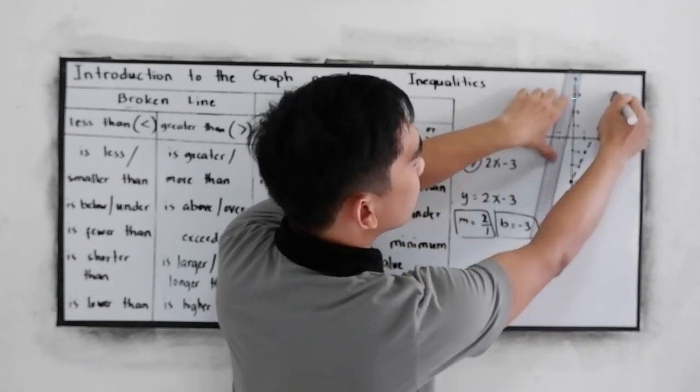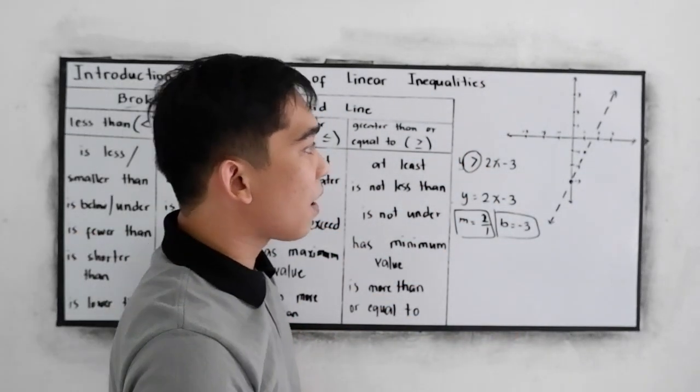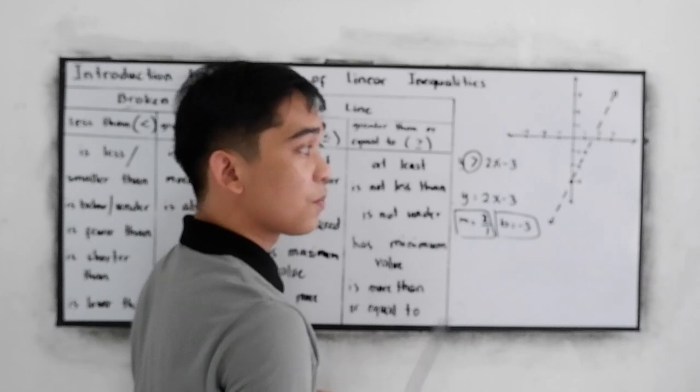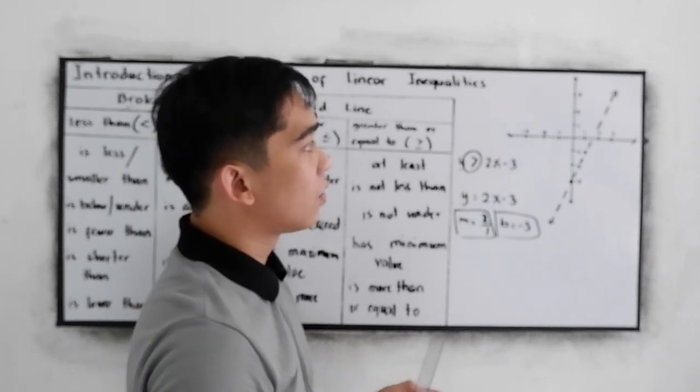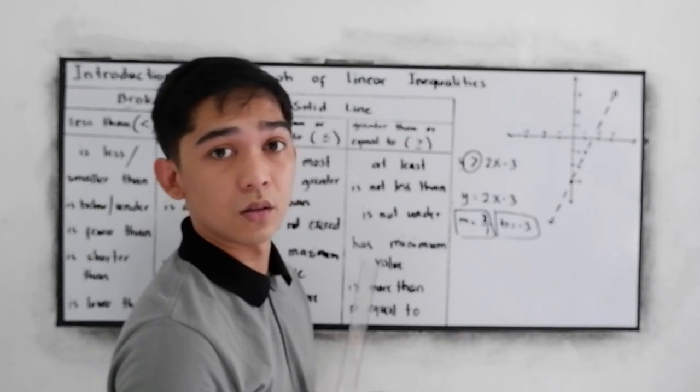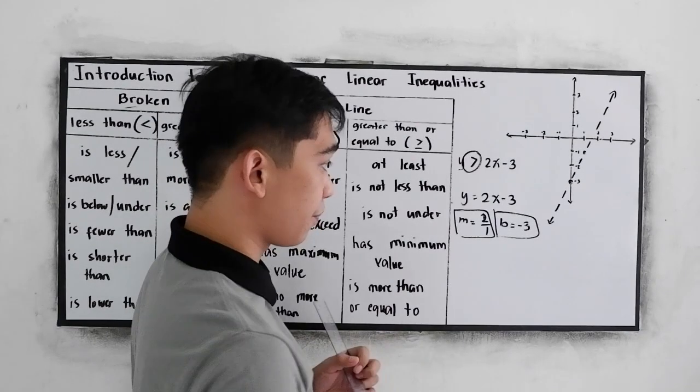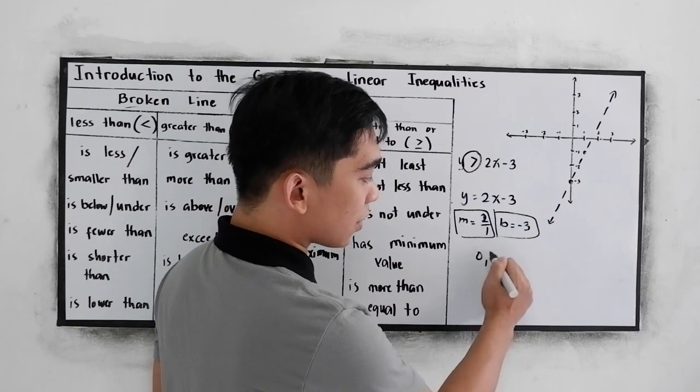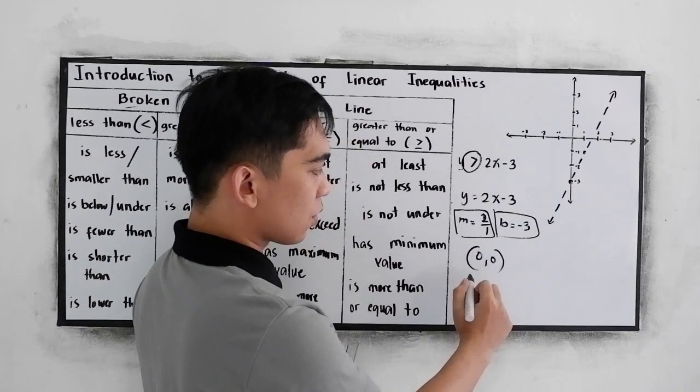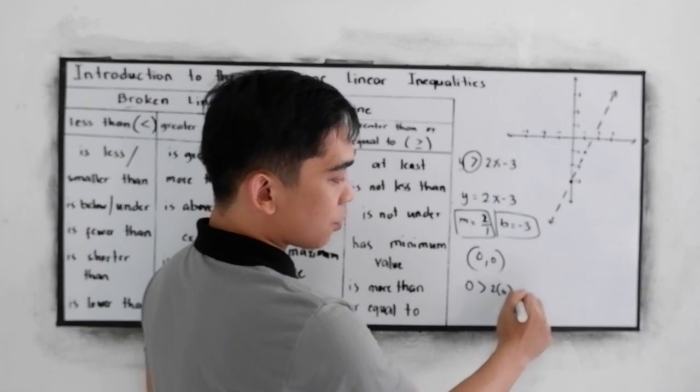Since this is inequalities, what part of our partition plane are we going to shade? So, we need to test 0, 0. So, 0 is greater than 2 times 0 minus 3.